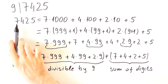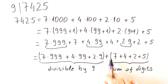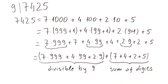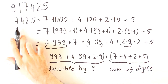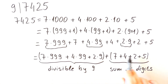So this number is equal to the sum of these two parts. The first part is divisible by 9 and the second part is the sum of its digits. And therefore, this number is divisible by 9 if the sum of its digits is divisible by 9, which in this case is true.